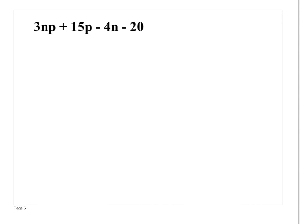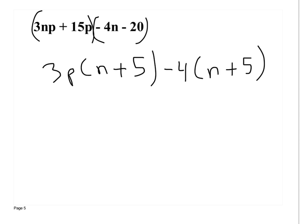So I have 3np plus 15p minus 4n minus 20. I'm going to group these. And then factor out the term of both those. So 3np and 15p. I can take 3p out of both those. The first term, I'm left with n. The next one, I'm left with 5. I can take -4 out of -4n and -20. I'm left with n plus 5. And the reason I took out -4 is because I needed this to be n plus 5 because I already had n plus 5. The only way I can combine them is if they're the exact same thing. So n plus 5 is there. Then I combine what's on the outside. 3p and minus 4.